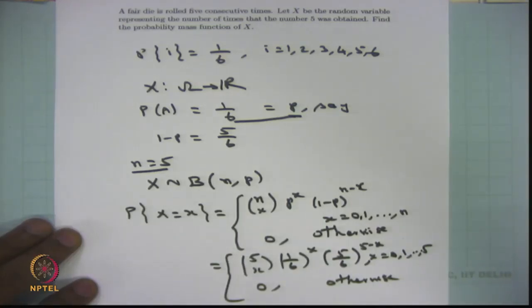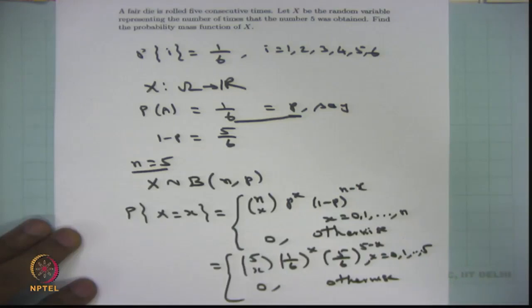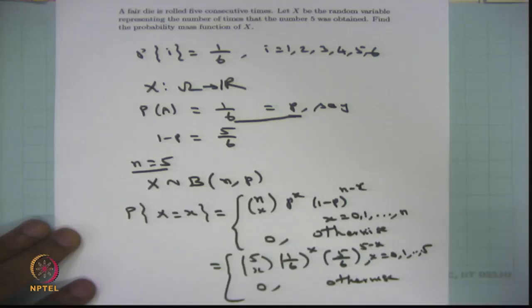Once you know the probability mass function, you can find probabilities like P(X ≤ 3) or P(X > 4). You can also find the mean and variance using the known relations for the binomial distribution, and even compute further moments for this problem.